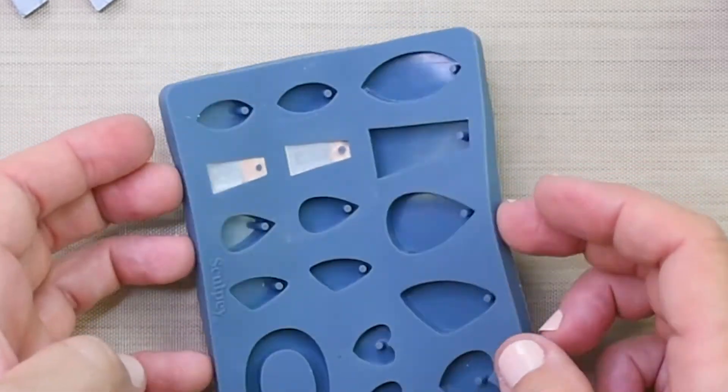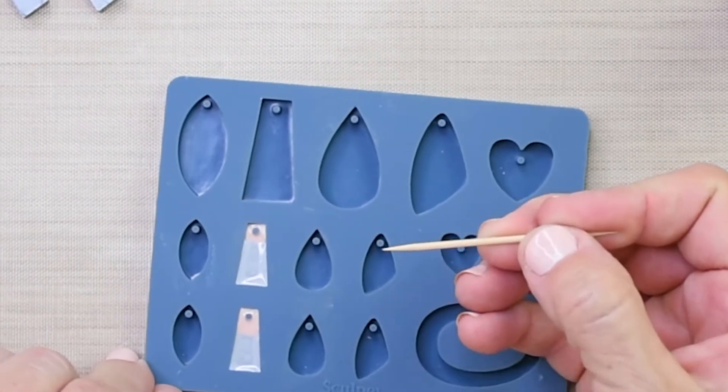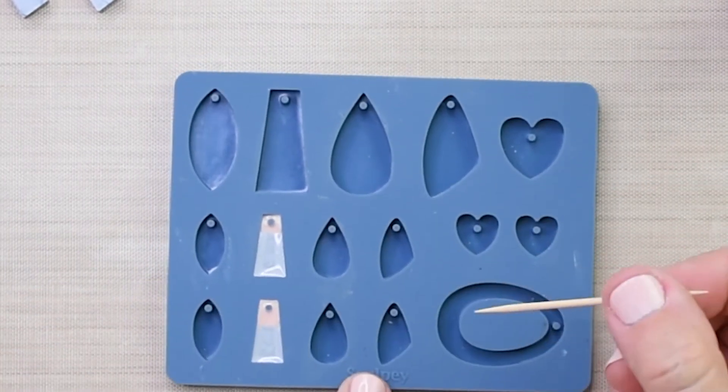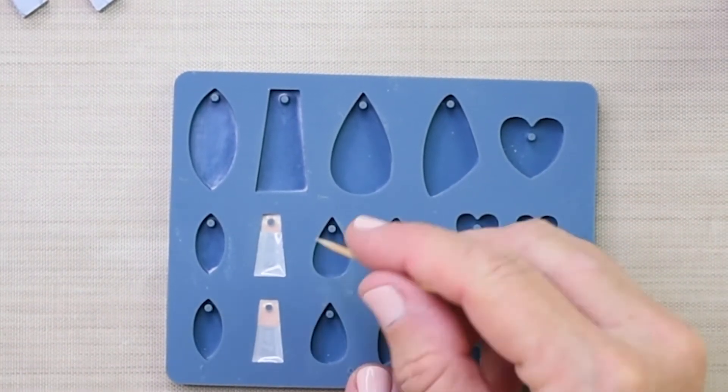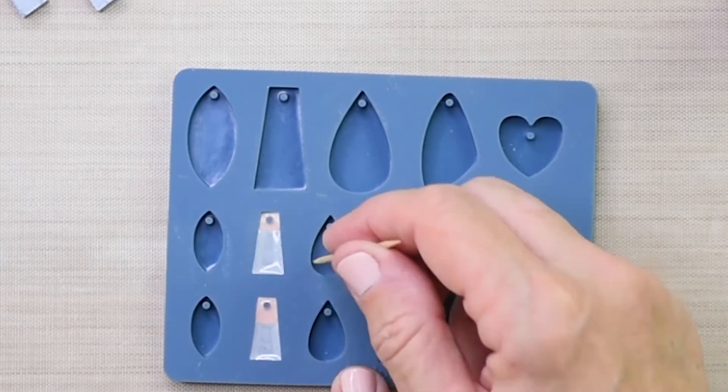Another way to release bubbles from the mold is to use the tip of a toothpick, and I'll show you in one of these empty wells. What you can do is take that tip and stick it all the way in. You want to get that toothpick right in that edge or corner that's in the mold shape.